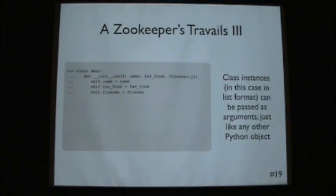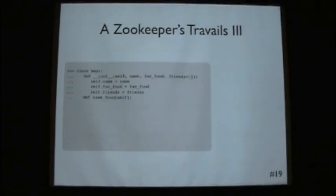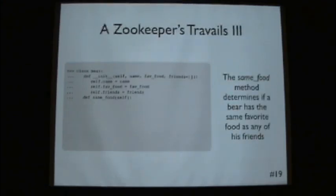Okay. So class instances can be passed in as arguments, just like any other Python object. So we can define a method called sameFood. And so this is gonna determine whether or not a bear has the same favorite food as any of its friends. Okay. So here friends is a list of instances of bears. So we can iterate over that list, and figure out if that friend's favorite food is the same as myself.favorite. And if so, we print that they both like the same food.